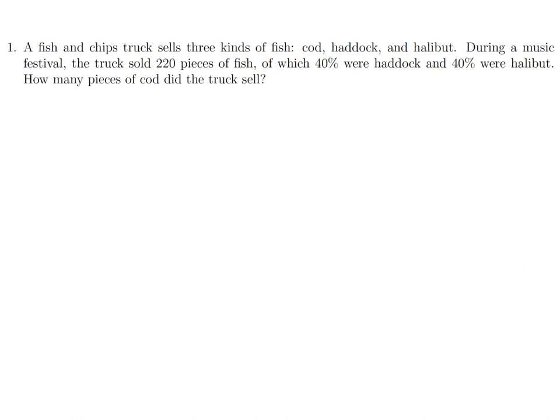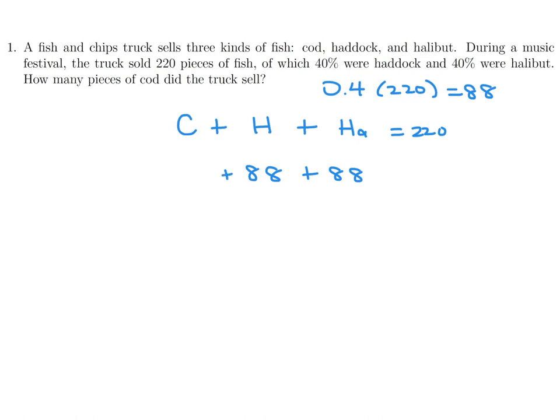A fish and chips truck sells three kinds of fish: cod, haddock, and halibut. During a music festival, the truck sold 220 pieces of fish, of which 40 percent were haddock and 40 percent were halibut. So 0.4 times 220 equals 88 for haddock and halibut combined. Solving for cod gives c equals 44 pieces of cod.